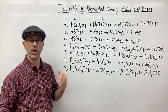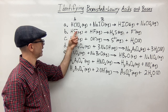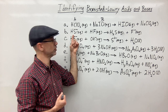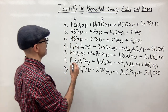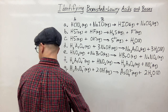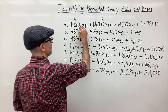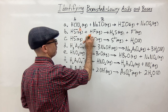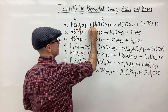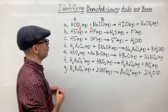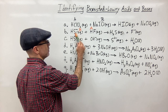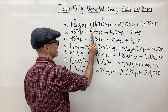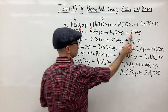For example B, we're going to see what donated the hydrogen and what accepted the hydrogen. We have HS⁻, and over here we have H₂S. So the HS⁻ picked up a hydrogen — it accepted the hydrogen, so it's acting as the base. The hydrogen came from HF, so HF is acting as the acid. The conjugate acid of the base is H₂S, and the conjugate base of the acid is F⁻, because they each differ by one hydrogen.